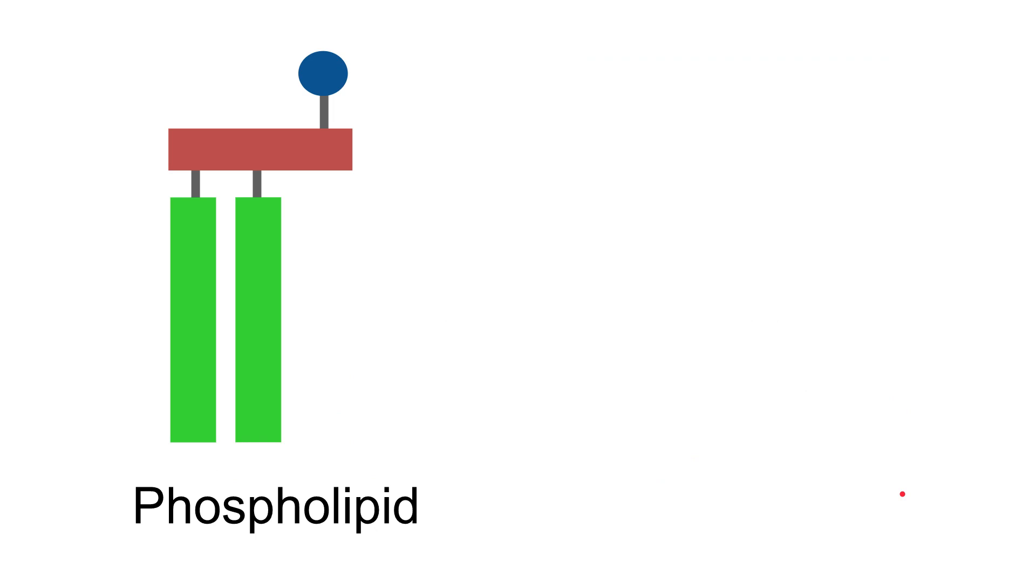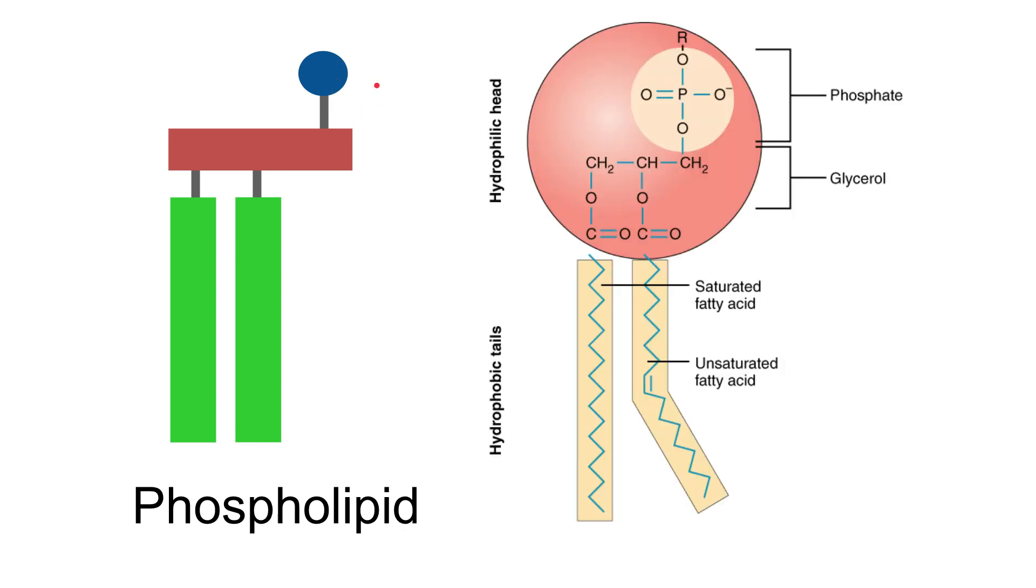The second type of lipid you need to be familiar with is a phospholipid. On first inspection it looks pretty similar to a triglyceride, but we no longer have three fatty acids bonded. We only have two, and in place of that we have this group up here. This is a phosphate group, so phosphate is PO4, and it's normally negative, PO4 negative.